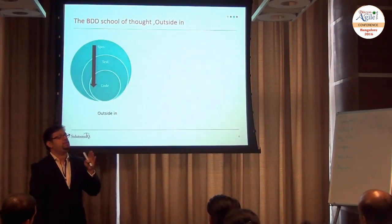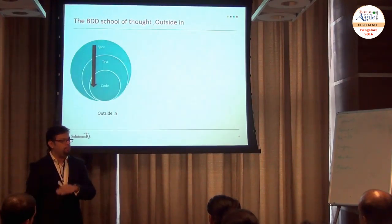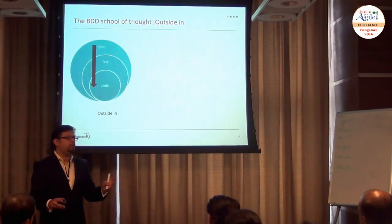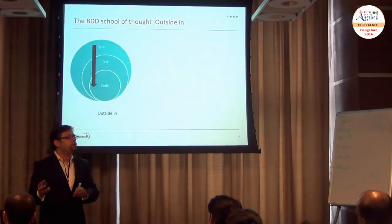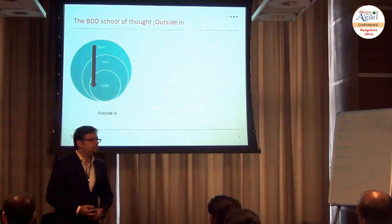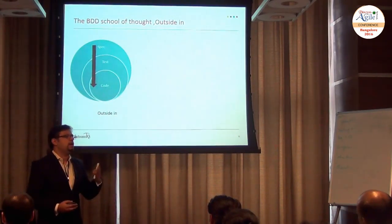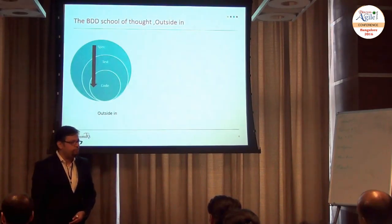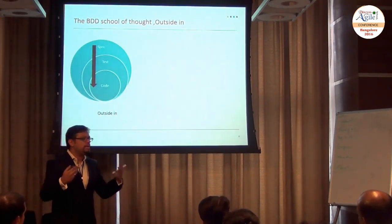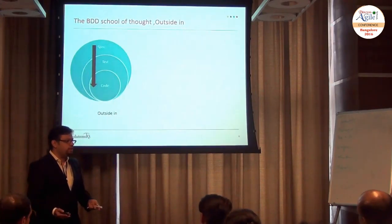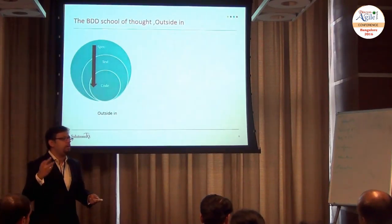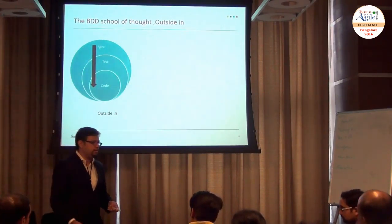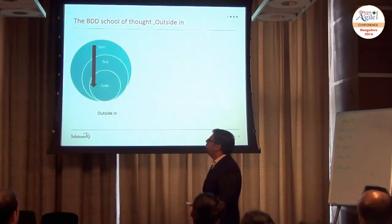User stories need not be written in the form of examples - that's what specification by example points out. We write it in the form of an example. For example, an ATM transaction: I go to an ATM, I swipe the card, if there is sufficient balance I withdraw, I should get the money - this is a user story. How do you translate it to specification by example? I have an account, it has a balance of $200, I withdraw $50, I should have a balance of $150. This is now an example. It communicates in a better way. When it comes to your complex problem domain, it relates to the person in a better way - that's why specification by example is more important.